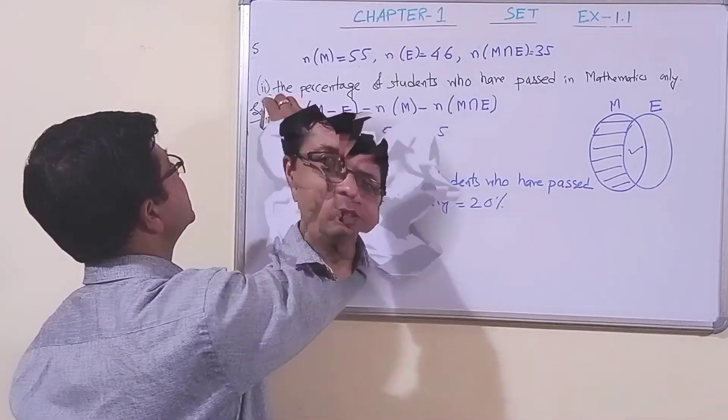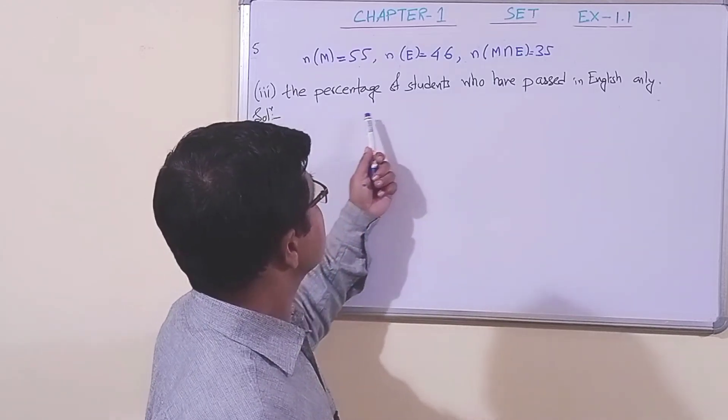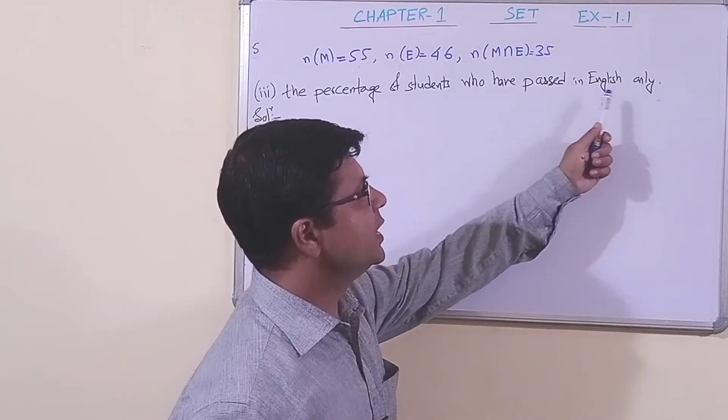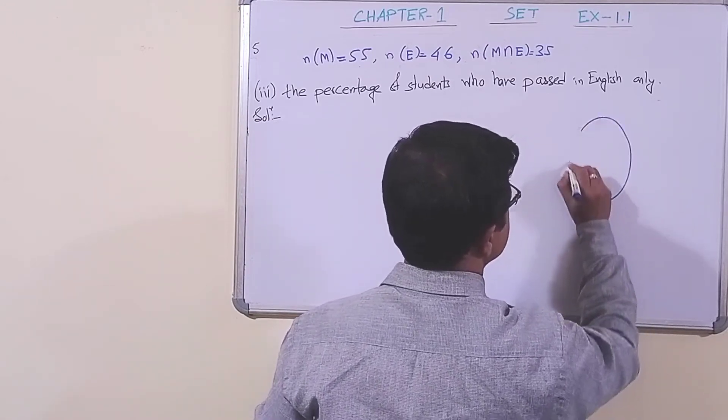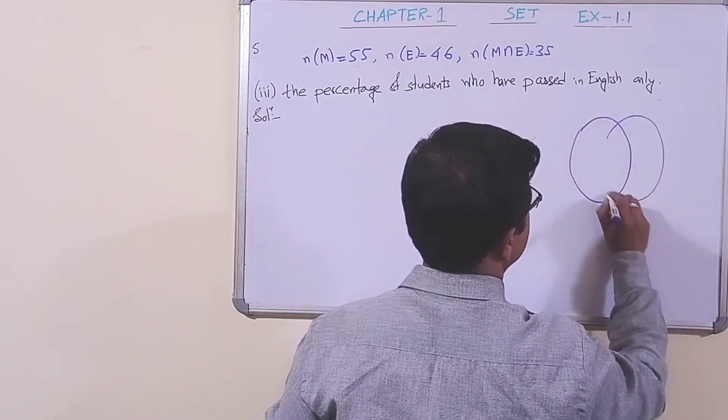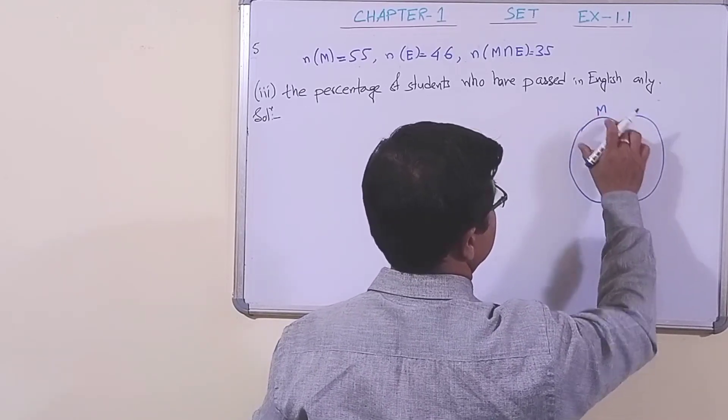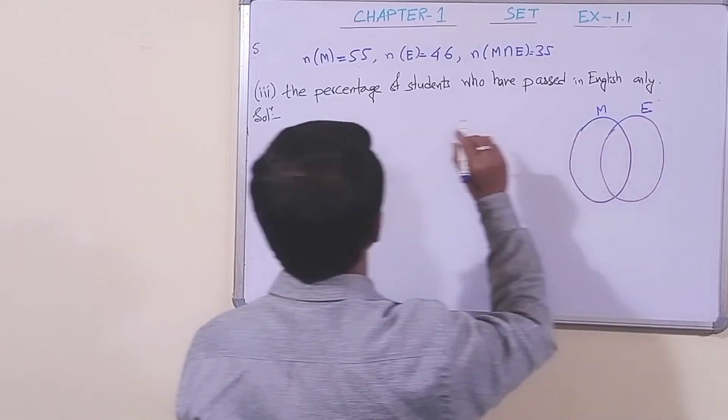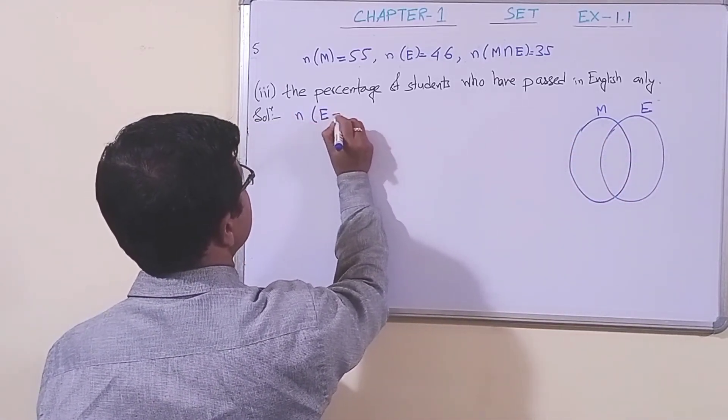Now, let us take part (iii). In part (iii), we are asked the percentage of students who have passed in English only. With the help of the Venn diagram, this is set M for mathematics and this is set E for English. We need to find n(E-M).